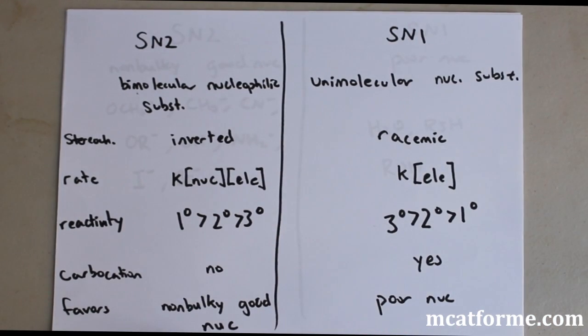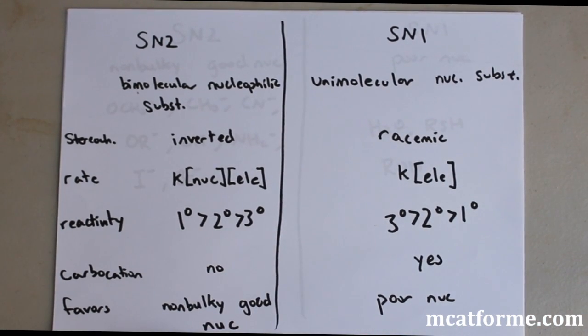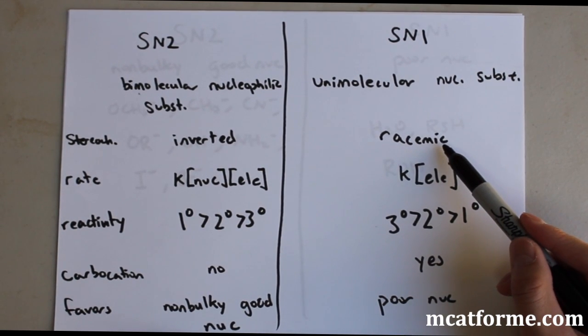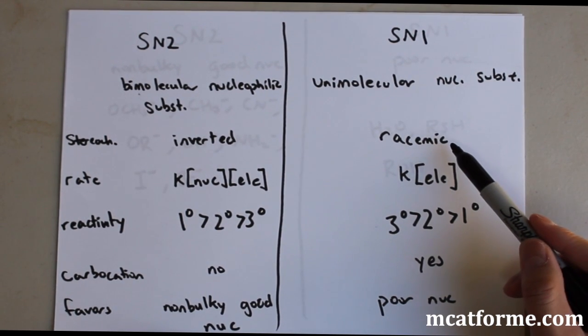In terms of stereochemistry, we saw that it was inverted because of the backside attack in SN2. And it was a racemic mixture in SN1 due to the carbocation formed.